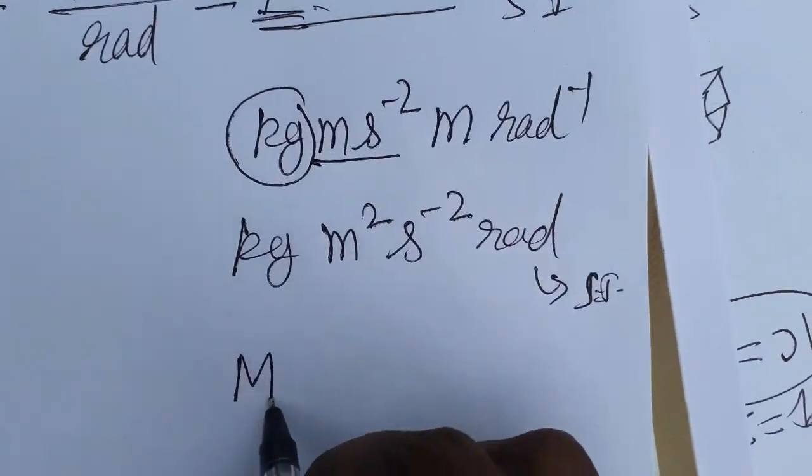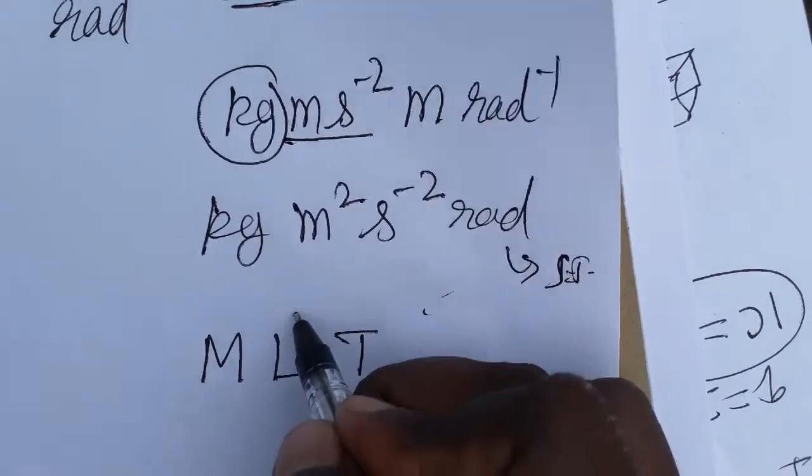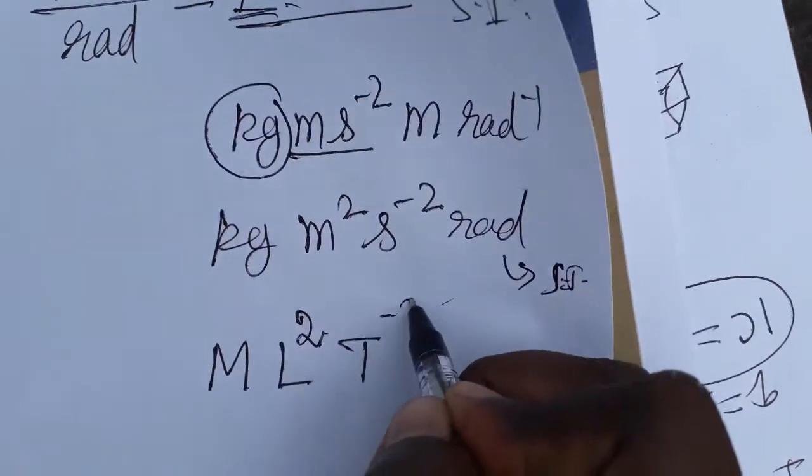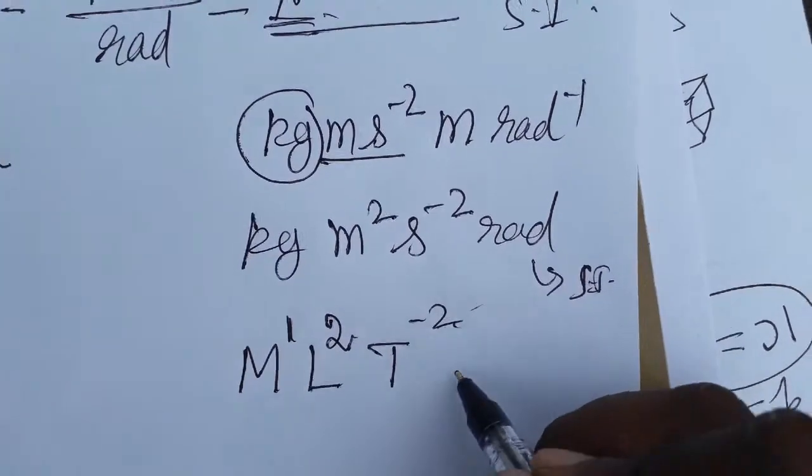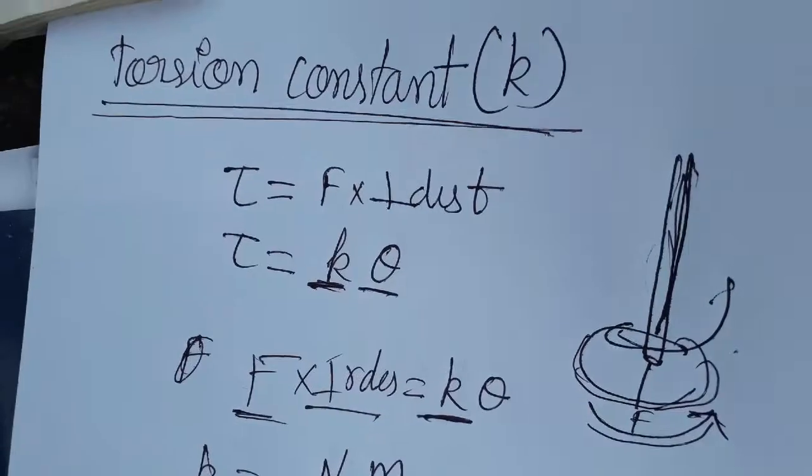What about the dimensional formula? M is for mass, L is for length, T is for time. Radian we are not going to give any dimensional formula. L square, T minus 2, M power 1. So we got the dimensional formula and SI unit of torsion constant.